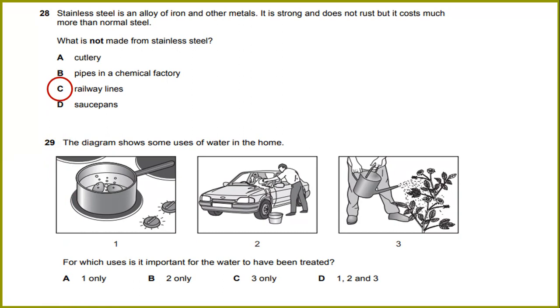The diagram shows some uses of water in the home. For which uses is it important for the water to have been treated? The answer would be number one only, because it's used to cook. For washing a car, we don't need treated water, and also watering plants, we don't need treated water.